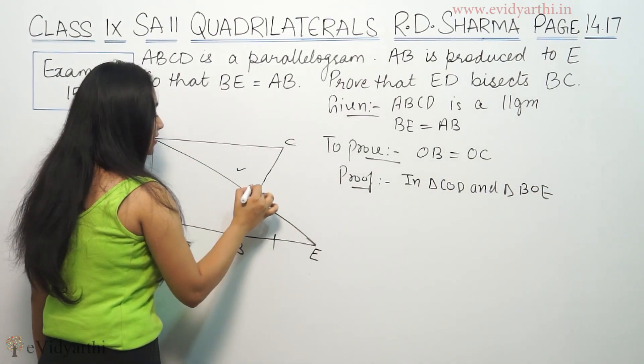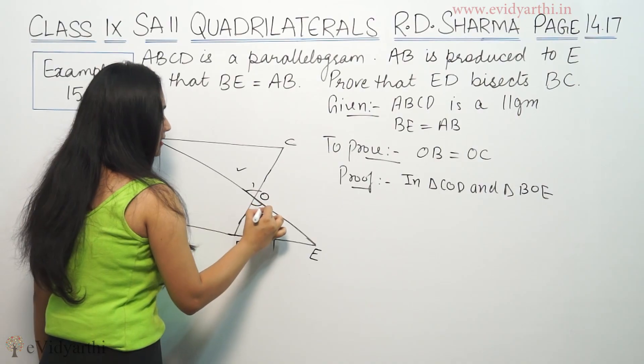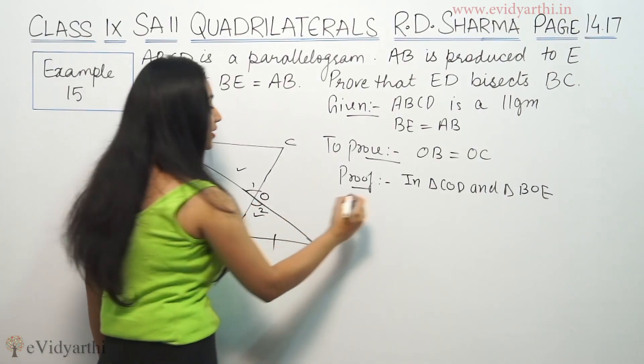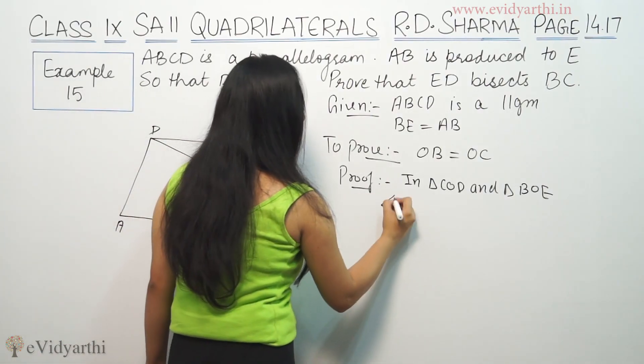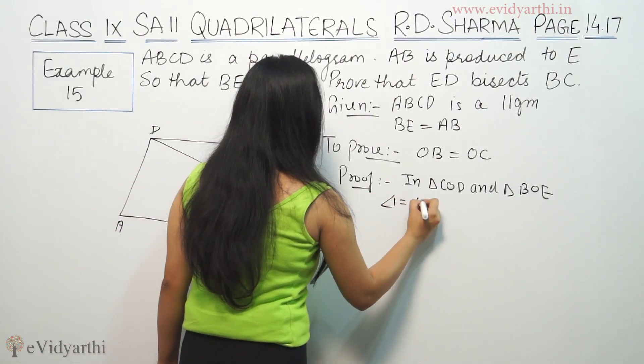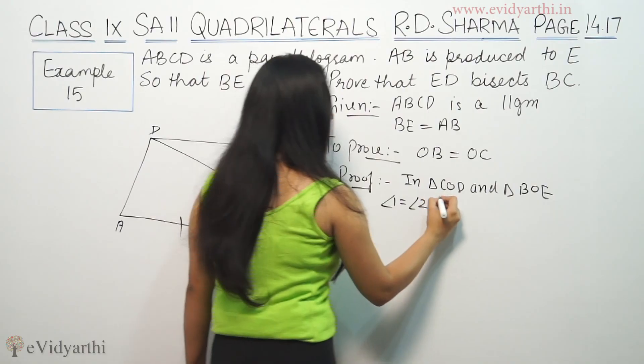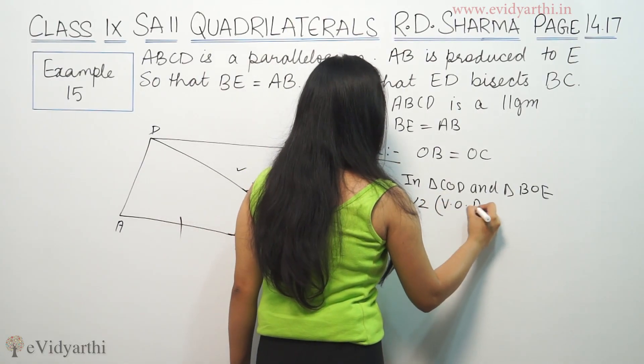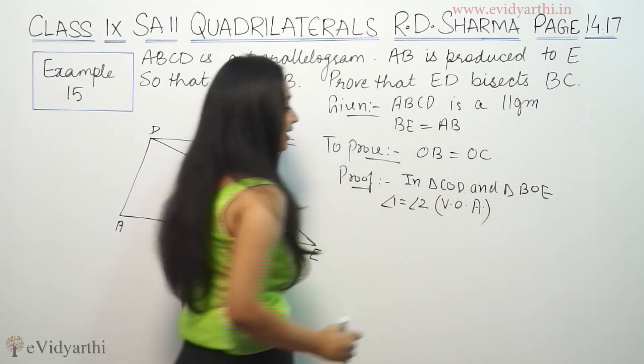We have to prove that this is angle 1 and this is angle 2. So these two angles are equal because they are vertically opposite. So angle 1 equals angle 2 — vertically opposite angles.